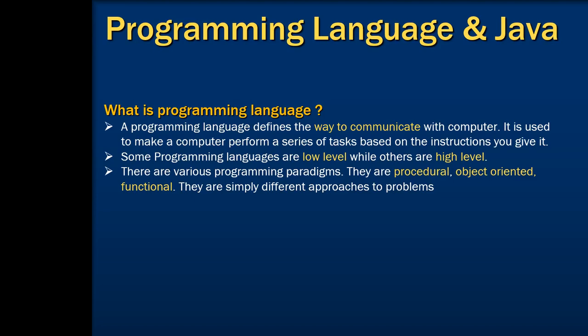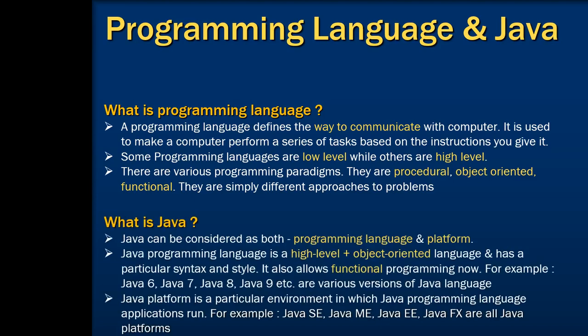Let's move on to understand what is Java. Java is considered as both a programming language and a platform. Java programming language is a high level object oriented language and has a particular syntax and its own style. With Java 8, it is also capable of creating functional programs. When you hear Java 6, Java 7, Java 9 — these all are versions of the programming language.